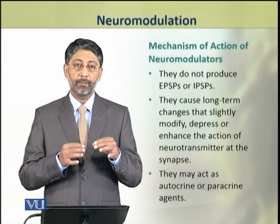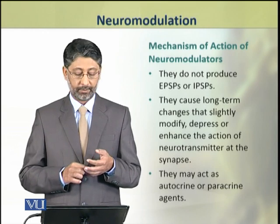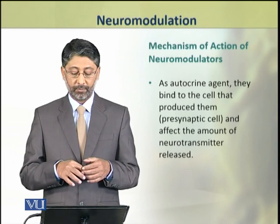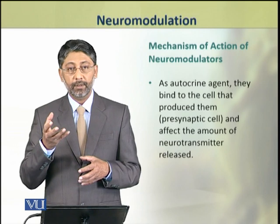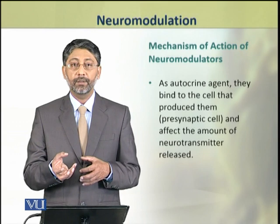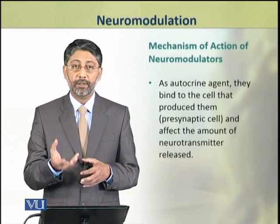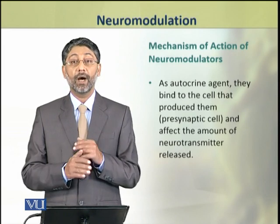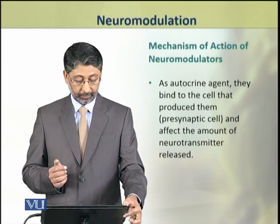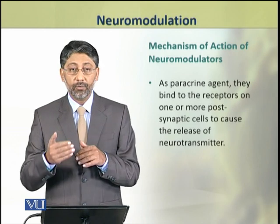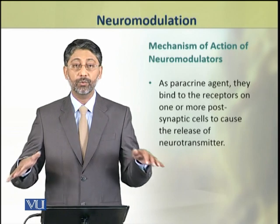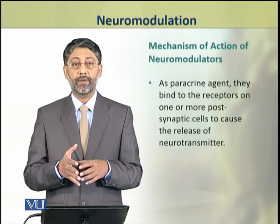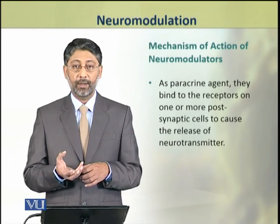The neuromodulators may act as autocrine or paracrine agents. As autocrine agents they rebind to the cell that produces them, that is the presynaptic cell, and direct it to release or inhibit the release of further neurotransmitters. اس طرح یہ release mechanisms کو control کرتے ہیں اور neurotransmitters کی جو release ہے اس کی amount کو effect کرتے ہیں۔